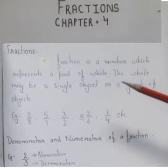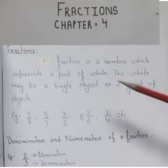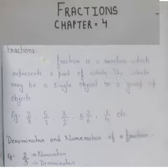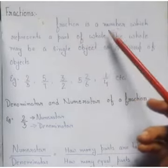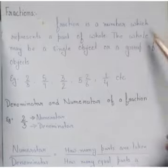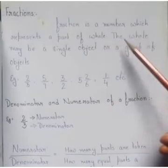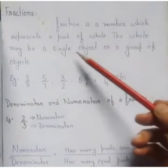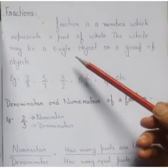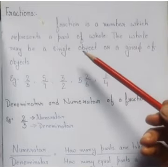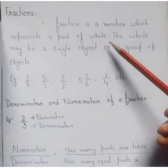Today we are starting your new chapter, chapter number 4, that is Fractions. So what is a fraction? A fraction is a number which represents a part of a whole. The whole may be a single object or a group of objects. So basically, a fraction represents a part of a whole.